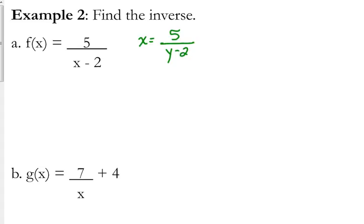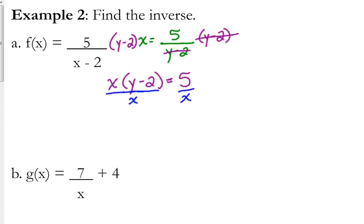We're trying to get y by itself. Right now it's stuck in the denominator. So to get it out of the denominator, our only option is to multiply by both sides. That'll make it go away on the right side. Now I'm not going to distribute the x times y minus 2, I'm going to leave it as x times y minus 2. I'm trying to get y by itself, so my next step is going to be to divide by that x that's in front.